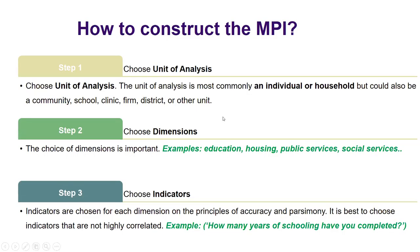We are clear about the unit of analysis — we can do it at an individual or household level, or for a community, school, district, region, or area. We have chosen the dimensions: for the global MPI, education, health, and standard of living — though you can extend that to public services, social services, etc. The indicators I just explained can be changed depending on the data you have, as long as they are simple and not highly correlated.